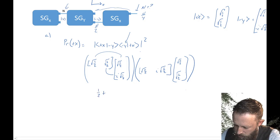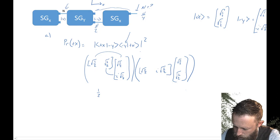Let's go ahead and calculate that. We multiply through: √½ × √½ gives one-half, and then that inner product term gives −i × one-half. The second part: i√½ × √½ gives +i × one-half. So we have one-half minus i one-half from the first part, and one-half plus i one-half from the second.